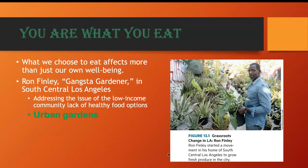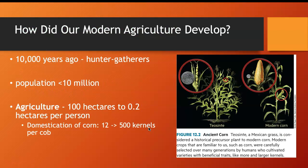Mr. Ron Fenley established urban gardens — I want you to read the opening story of the chapter. He had a lot of courage: he utilized strips along the roads and land spaces we wouldn't even imagine using to grow vegetables. He realized that low-income communities do not have enough healthy food choices. I want you to think about why he grows vegetables rather than raising chickens, pigs, or cattle — this is very profound when you think about our diets.